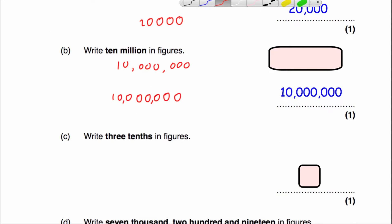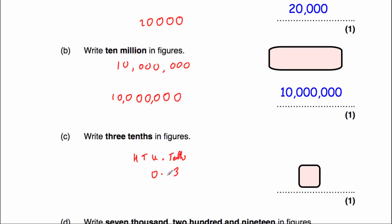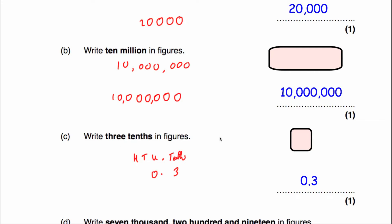The next question says to write 3 tenths in figures. We have hundreds, tens, units or ones, then the decimal point and then tenths. We've been asked to write 3 tenths, so that's going to be 0.3. If it were 7 tenths it would be 0.7, if 9 tenths it would be 0.9, and so on.